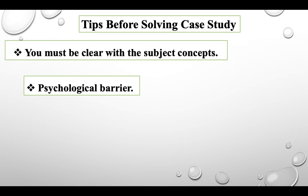The second imperative thing is the psychological barrier. This is one of the biggest problems that most students face while solving a case study. Most students think they cannot solve a case study, so they will never look at it — even though case studies are asked at the end of the question paper and carry the maximum marks and highest weightage. Students skip it because they have that psychological barrier.